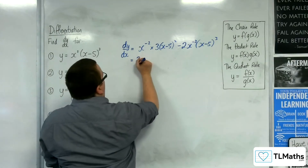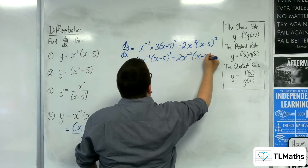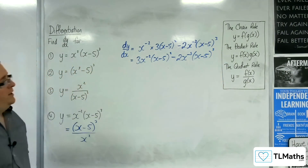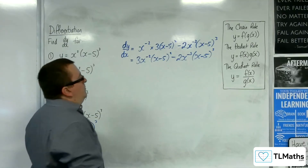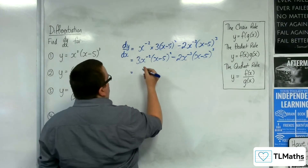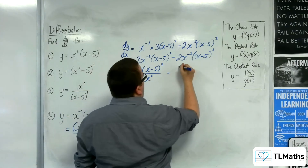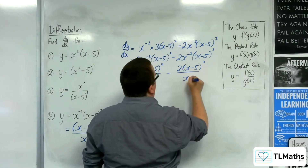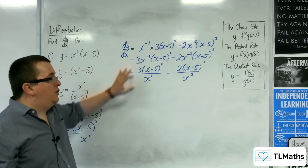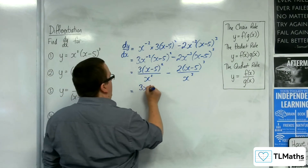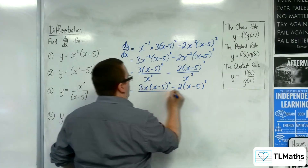Tidying that up: 3x to the minus 2 (x minus 5) squared minus 2x to the minus 3 (x minus 5) cubed. Then you have to deal with how to factorise. The best way is to write it as 3(x minus 5) squared over x squared minus 2(x minus 5) cubed over x cubed, then multiply the first fraction top and bottom by x to get a common denominator.